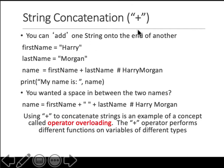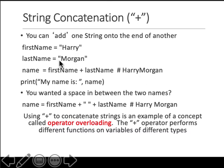For concatenation, if you have one variable defined as Harry and the second variable defined as Morgan, both inside quotes, and you define a new variable called name which is the first variable plus the second variable and try to output that, you will see HarryMorgan - because the first variable is Harry and the next is Morgan with no space in the string.